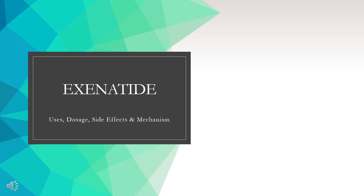Exenotide is a GLP-1 agonist used in the management of type 2 diabetes mellitus. In this video, we will cover: What is Exenotide? What is Exenotide used for? Contraindications. What are the side effects of taking Exenotide? How does Exenotide work? And how to use Exenotide?